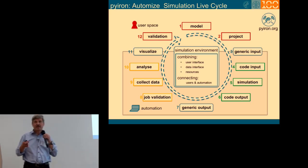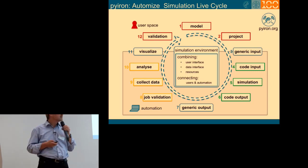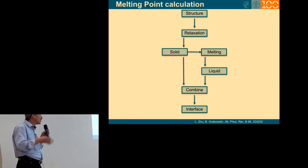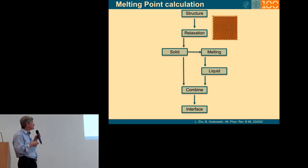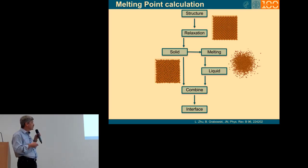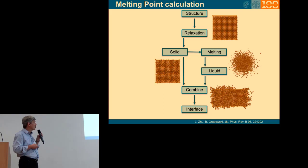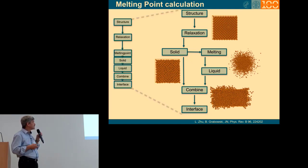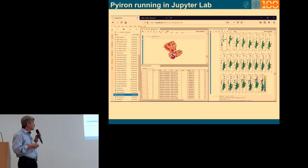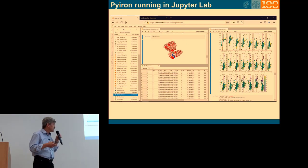So the key approach was really to try to optimize the typical simulation life cycle and it starts having a model defining a project and then having something like what we call generic input. And generic input means if I'm running a DFT calculation, if I'm running an empirical potential calculation, I should not be forced to change my input and then automatically this has to be translated into the generic input, running the job, getting the output and again going back to generic output.